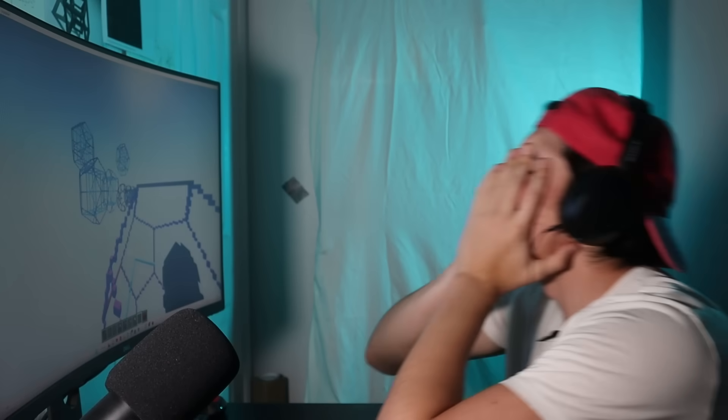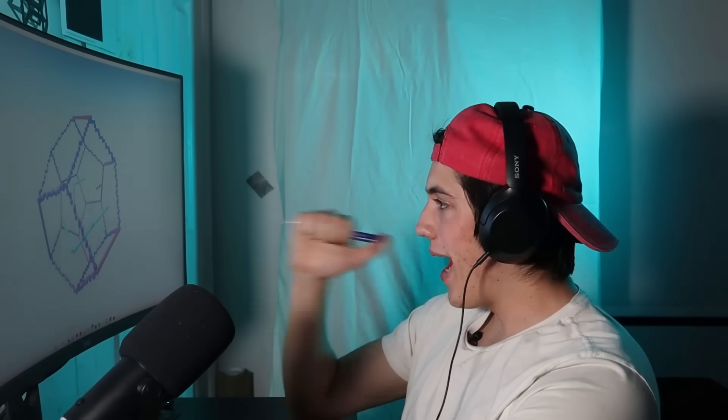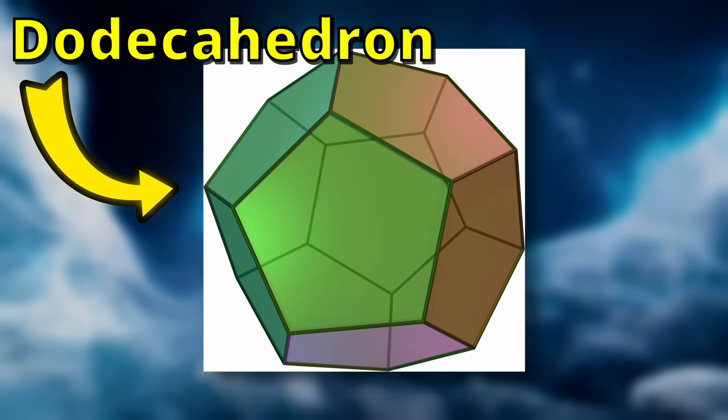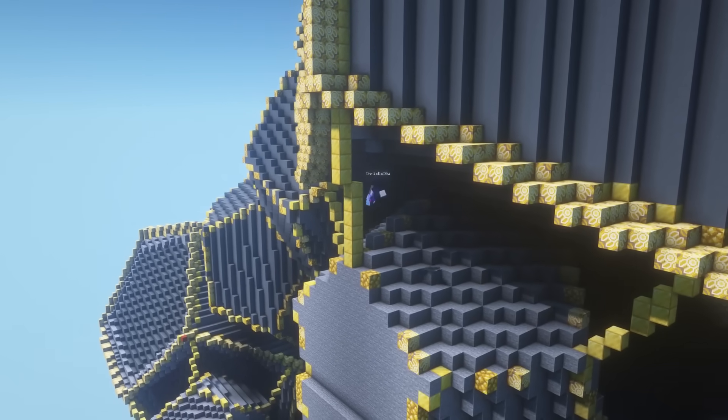But now it was time for the final, most anger-inducing build project I have ever worked on. I just spent the last 10 hours figuring out how to make one of these things, and it looks like a freaking soccer ball. Now, this is where we run into probably one of the hardest problems I have ever had to solve for a Minecraft build. How to stack these two shapes on top of each other.